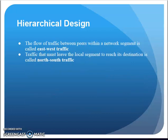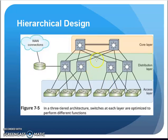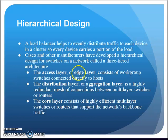Here is the typical design: we have the access layer, distribution layer, and core layer. The access layer is where your layer two switches are — where workstations, IP phones, and access points are plugging in. This is where users are getting access to the network. These are your workgroup switches connected directly to the hosts.